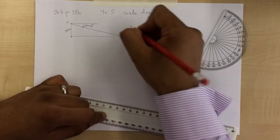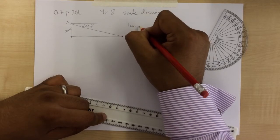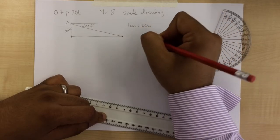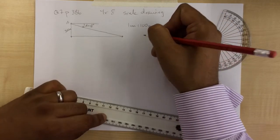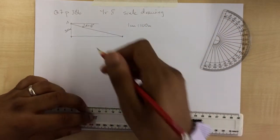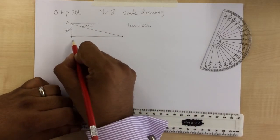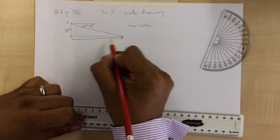Using a scale of 1 centimetre to 100 metres. OK, so we want to find out the horizontal distance of the aircraft from the runway. We want to find this distance here. That is our question.